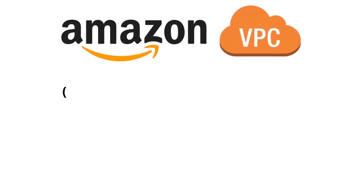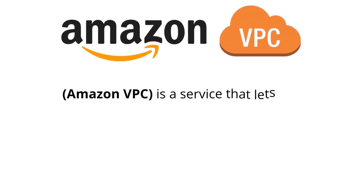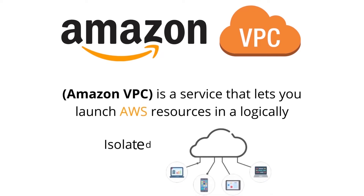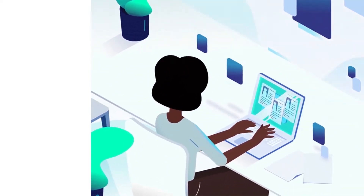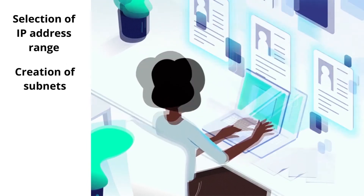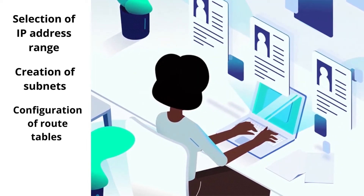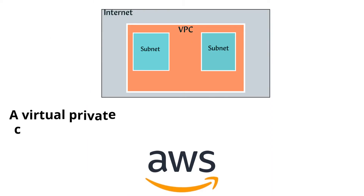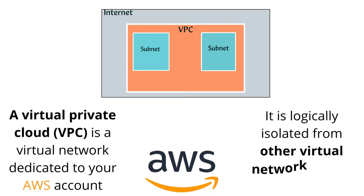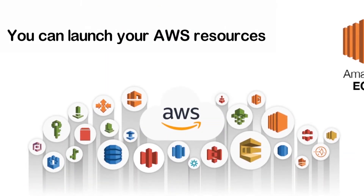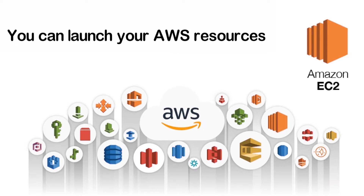Amazon Virtual Private Cloud. Amazon VPC is a service that lets you launch AWS resources in a logically isolated virtual network that you define. You have complete control over your virtual networking environment, including the selection of your own IP address range, the creation of subnets, and the configuration of route tables and network gateways. A VPC is a virtual network dedicated to your AWS account, logically isolated from other virtual networks in the AWS cloud. You can launch AWS resources, such as Amazon EC2 instances, into your VPC.